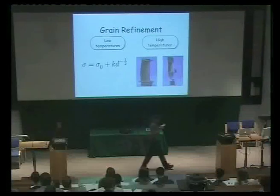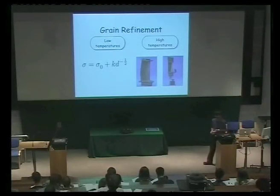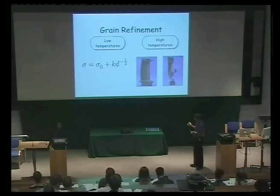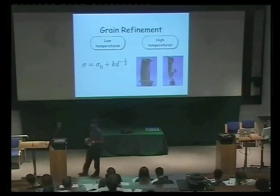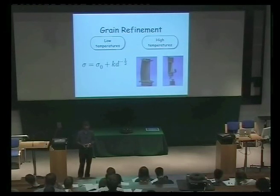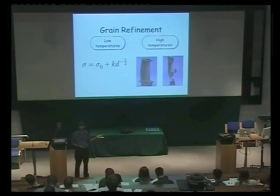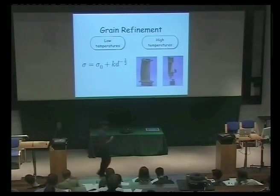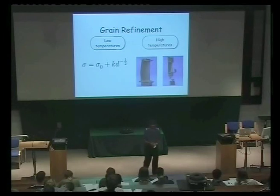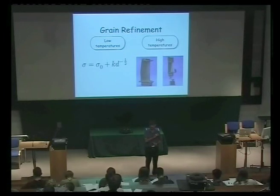When talking about service at very high temperatures, we need to get rid of grain boundaries. But when using materials at relatively low temperatures where diffusion is unimportant — that means anything below about 500 degrees centigrade in the case of iron, and anything below about 200 degrees centigrade in the case of aluminium — we actually want a very fine grain structure. There's a huge amount of research going on to try and get grains as small as a few nanometers in size in commercial production.